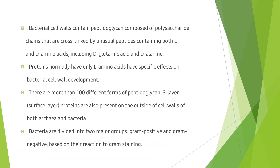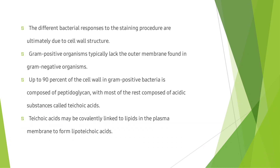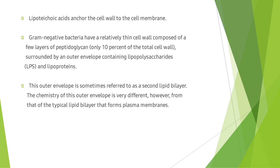Bacteria are divided into two major groups, gram positive and gram negative, based on their reaction to gram staining. The different bacterial responses to the staining procedure are ultimately due to the cell wall structure because of the presence of the peptidoglycan layer. Gram positive organisms typically lack the outer membrane found in gram negative organisms. Up to 90% of the cell wall in gram positive bacteria is composed of peptidoglycan, with most of the rest composed of acidic substances called teichoic acids. Teichoic acids may be covalently linked to lipids in the plasma membrane to form lipoteichoic acids, which anchor the cell wall to the cell membrane.